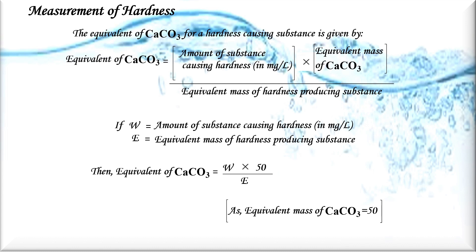To measure hardness, the equivalent of calcium carbonate for a hardness-causing substance is given by: the amount of substance causing hardness in milligrams per liter, multiplied by the equivalent mass of calcium carbonate, divided by the equivalent mass of the hardness-producing substance. So if W equals the amount of substance causing hardness in mg/L and E is the equivalent mass of the hardness-producing substance, then the equivalent of CaCO₃ equals W × 50 / E, since the equivalent mass of calcium carbonate is 50.